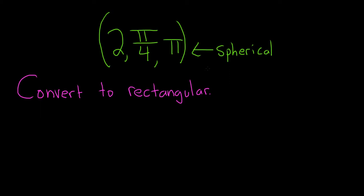So we have a point in spherical coordinates and we're being asked to convert it to rectangular, so solution. The most important thing in order to do this problem is that you have the formulas.